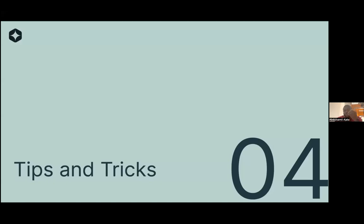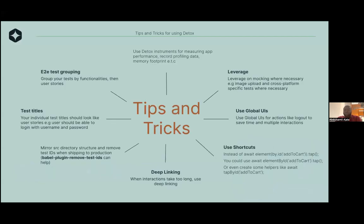Let's look at tips and tricks for writing E2E tests. First, you want to do test grouping — group tests by their functionalities and by user stories. For example, you want to group things that lead to authentication in one place and then start breaking them down into user stories. You also want to leverage on mocking when necessary. For example, if you want to do image upload or some other specific tests, there are a lot of complexities around making some of these things happen.